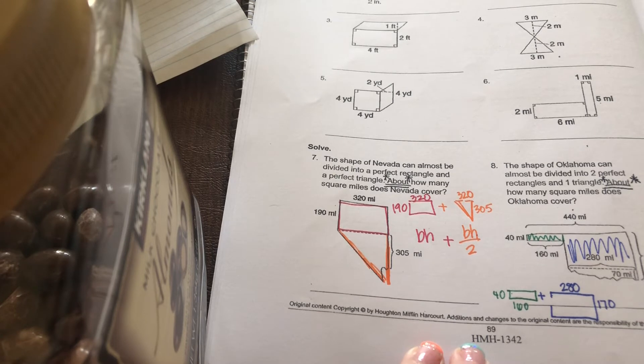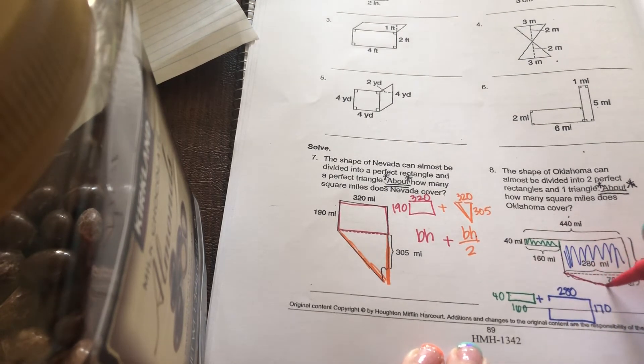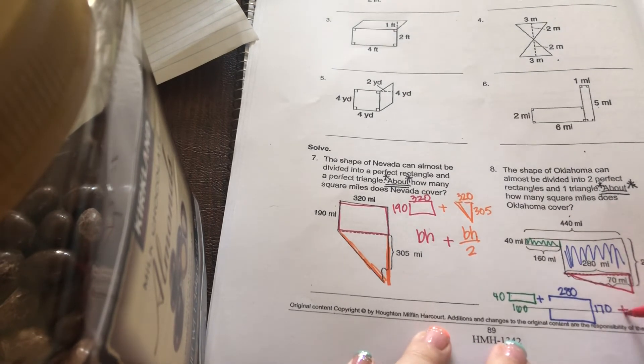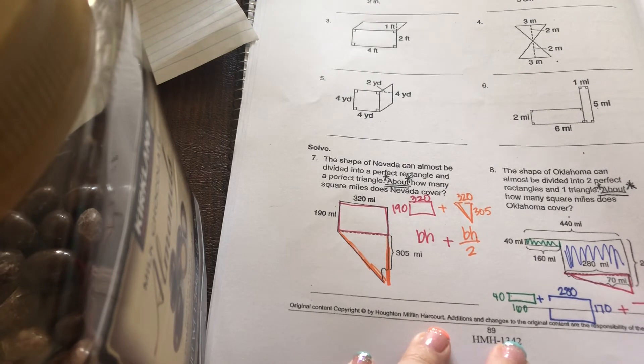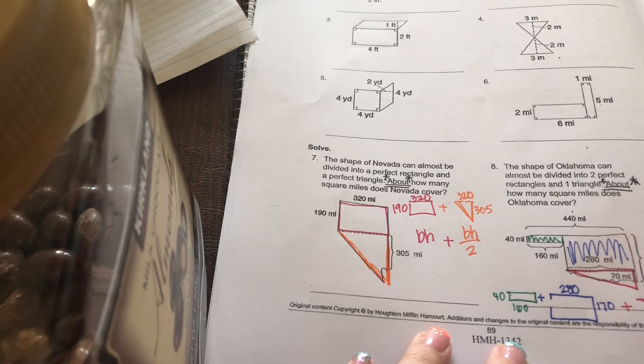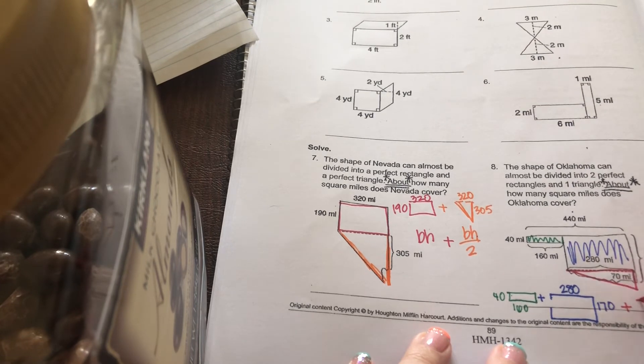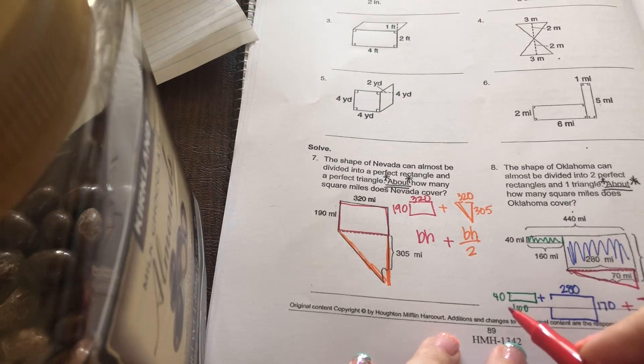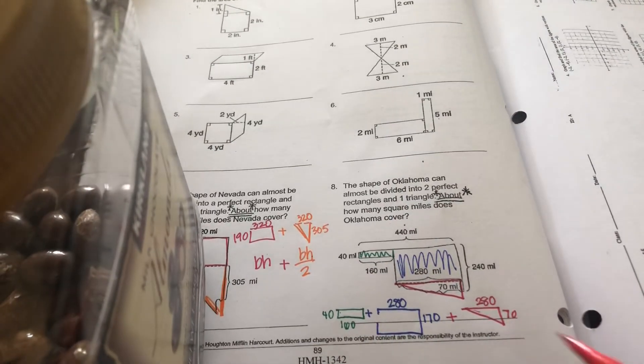Then you have this bottom. What shape does that look like to you? Triangle, right? So I have this bottom triangle. Well, it told me that the height is 70. And the base, it did tell me it's 280. So base times height, base times height. And then for your triangle, you're going to do base times height divided by 2.